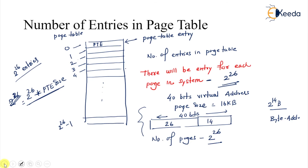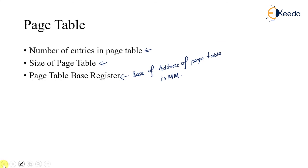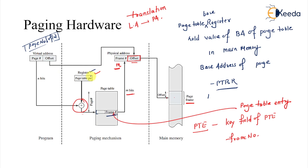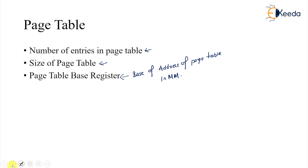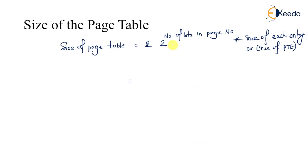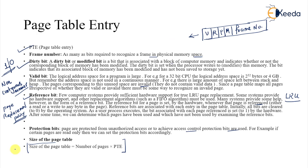To summarize, we've covered the page table in every context: the hardware part with the Page Table Base Register, the number of entries in the page table (equal to the number of pages, i.e., 2^(bits in page number)), the size of the page table (number of entries multiplied by size of each PTE), and the fields within a page table entry such as frame number, dirty bit, valid bit, and reference bit. In the next section we are going to solve problems related to the page table. Thank you.